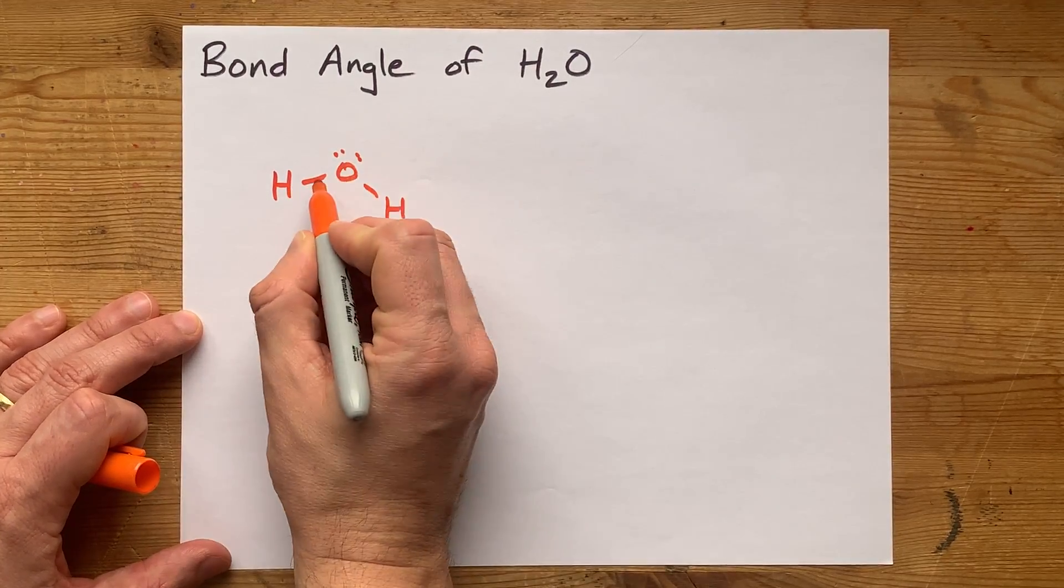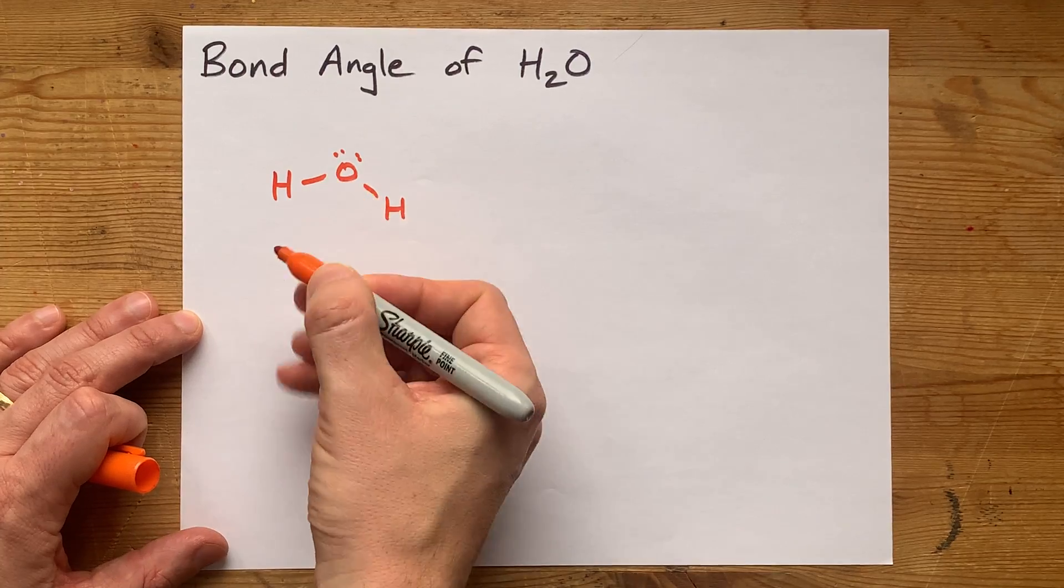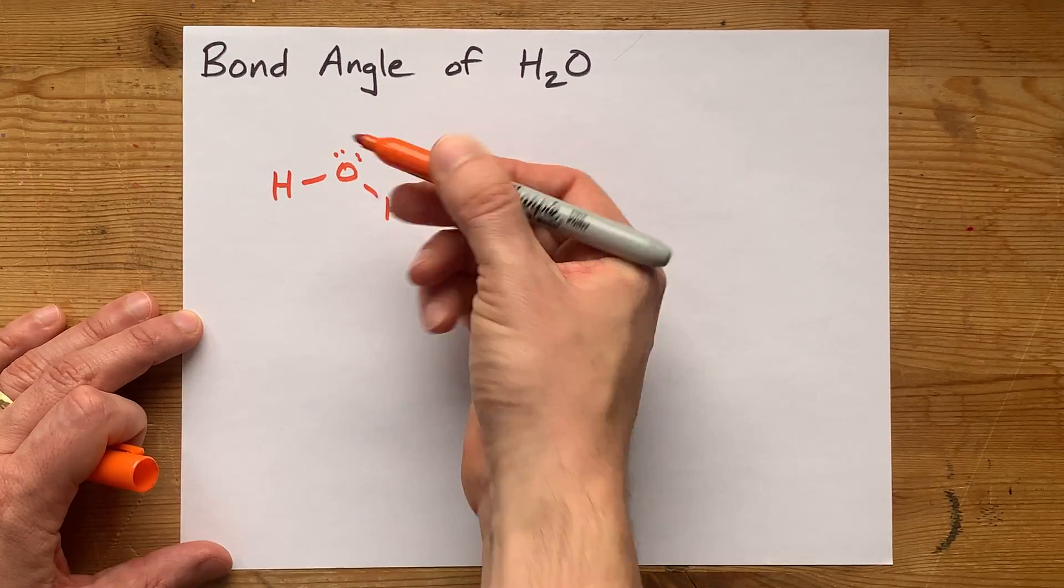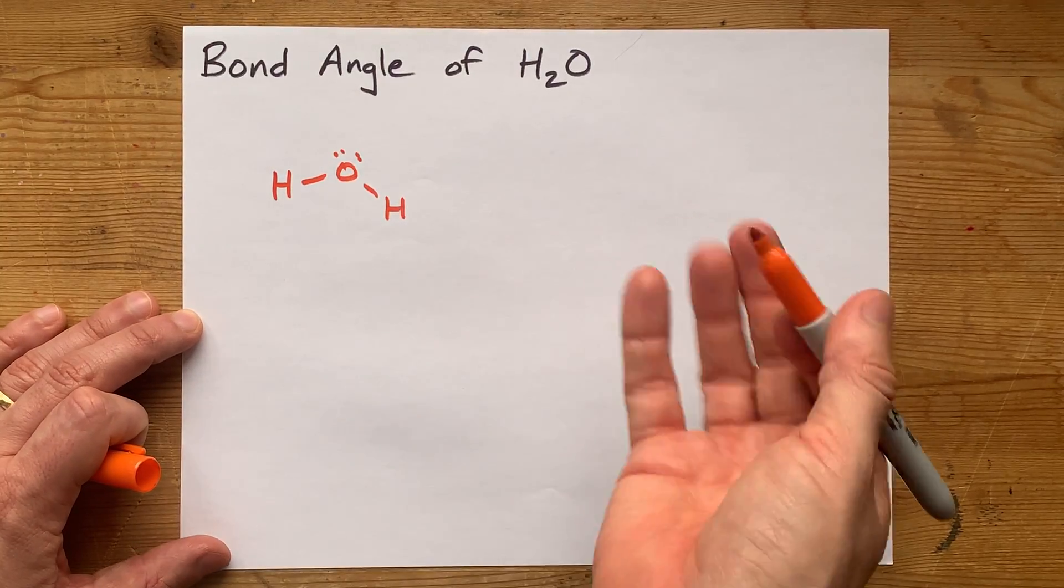and then around the oxygen we have one, two pairs of bonding electrons and one, two pairs of lone electrons, or lone pairs of electrons.